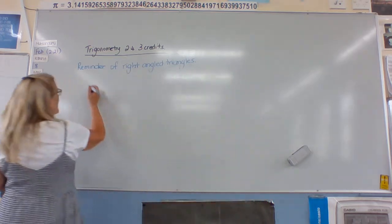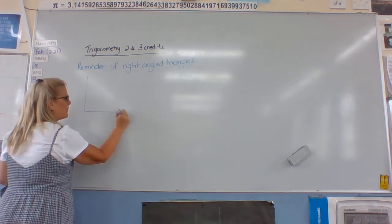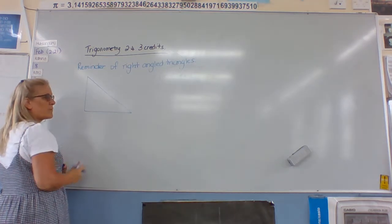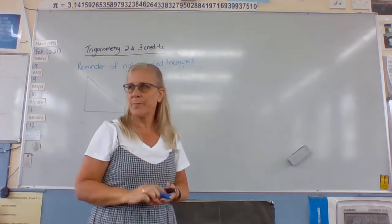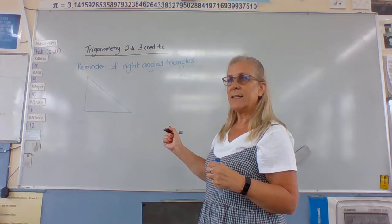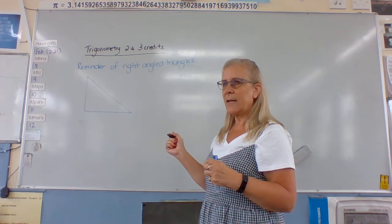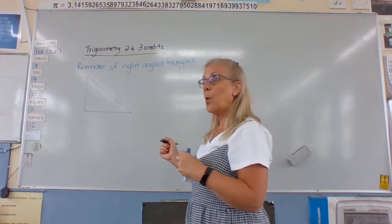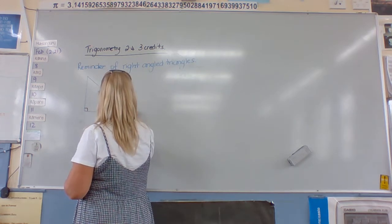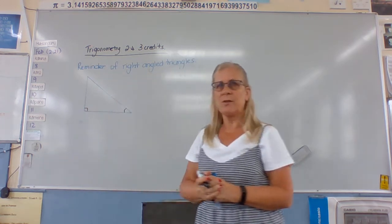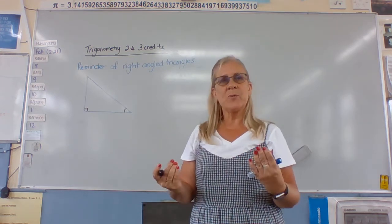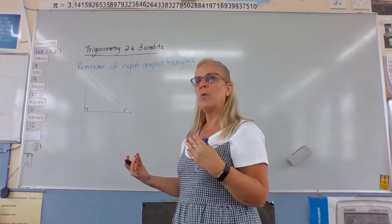So, if we have a right angle triangle, what do we need to know? An angle and a length. We need to know where the right angle is, and we need to know which angle we're talking about. Those are the two important parts, because that enables us to name the triangle with...